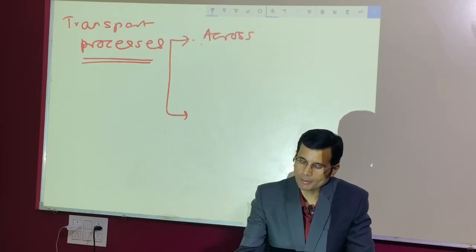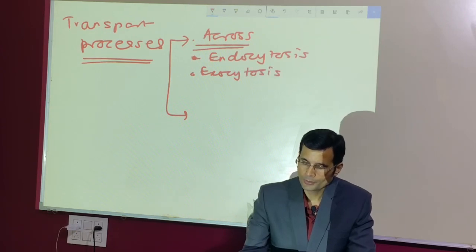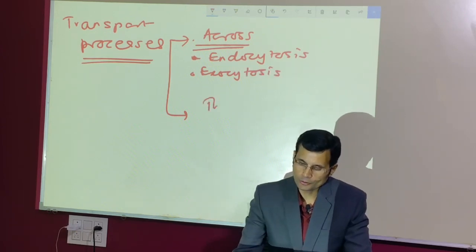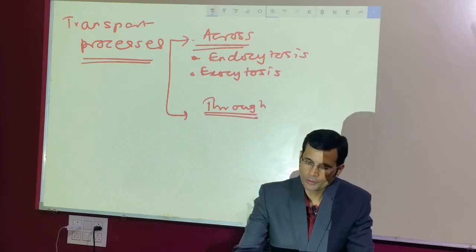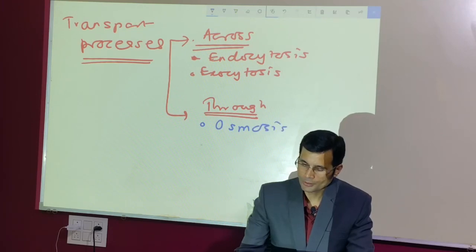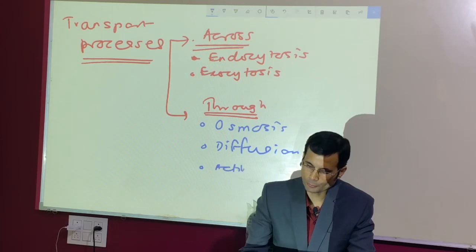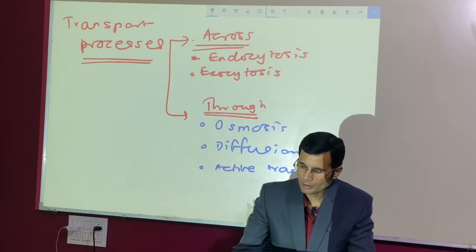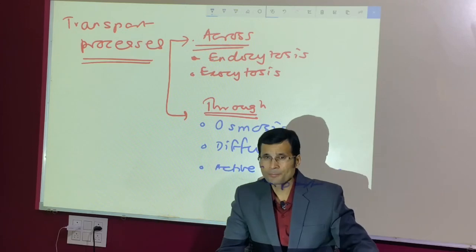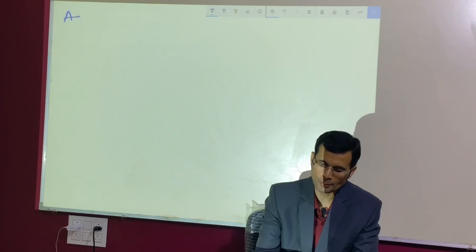Transport across the membrane includes endocytosis and exocytosis. Transport through the membrane includes osmosis, diffusion, and active transport. Let's talk about these transport processes one by one, starting with transport across the membrane.